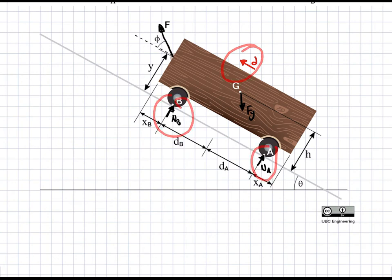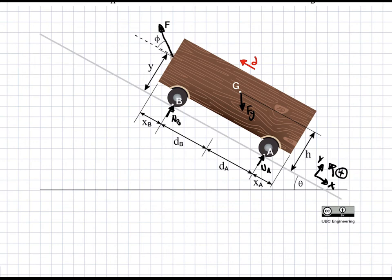Acceleration is not a force, but its direction matters for the force balance. So we pick our coordinate system along the slope: y will be up perpendicular to the slope, x will be positive along the slope, and positive rotation is counterclockwise with respect to x and y. Now let's draw our free body diagram.